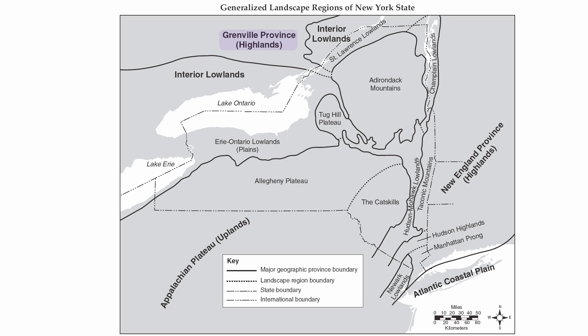The third feature we have are the mountains. You have the Grenville Province, which are highlands or mountains up in Canada. You also have the Adirondack Mountains, the Taconic Mountains, the Hudson Highlands, and the New England Province, which extends up into Vermont. These regions are strictly made up of metamorphic rock, which indicates a much higher relief — your true mountain ranges.